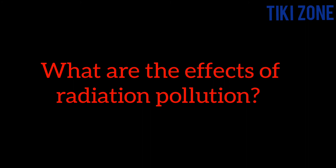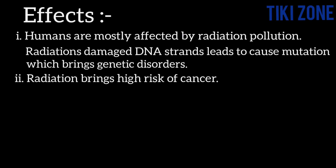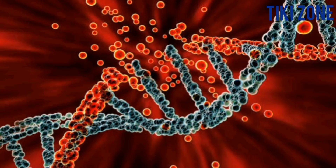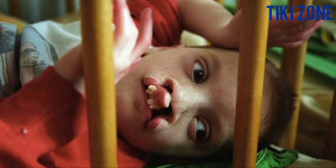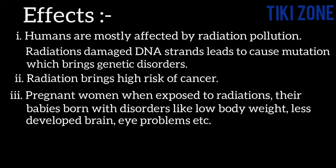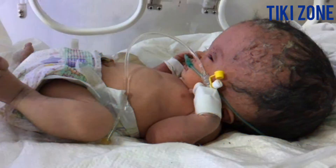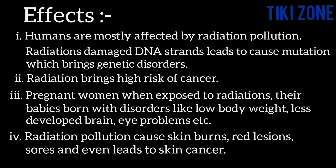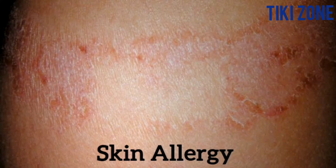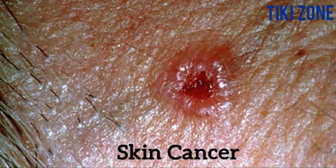Out of all organisms, humans are mostly affected by radiation pollution. Radiation damages DNA strands, which leads to mutation and brings genetic disorders. Radiation also brings a high risk of cancer. When pregnant women are exposed to radiation, their babies can be born with disorders like low body weight, less developed brain, and eye problems. Radiation pollution also causes skin burns, sores and even skin cancer.